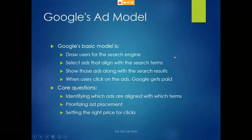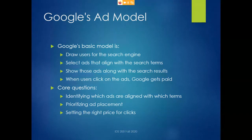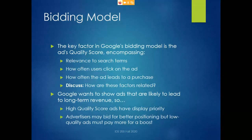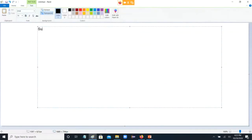Google's basic model for ads draws users in to use the search engine by having excellent quality search results, then selects ads that align well with the search terms, shows those ads alongside the search results, and when users click on the ads Google gets paid. That's the core model. Key questions: number one, identifying which ads are aligned with which terms; number two, prioritizing ad placement; and number three, setting the right price for clicks.